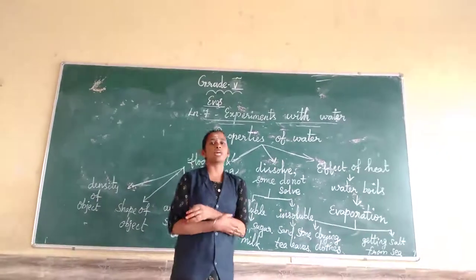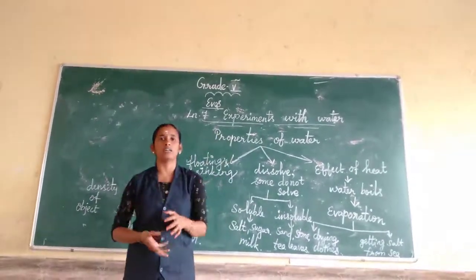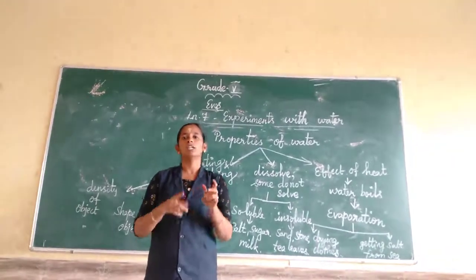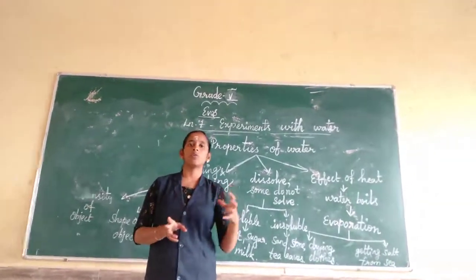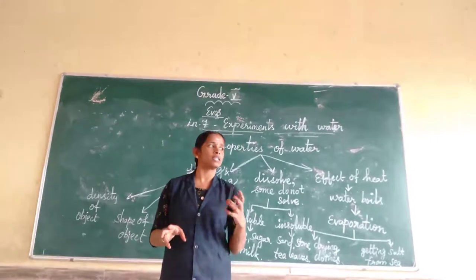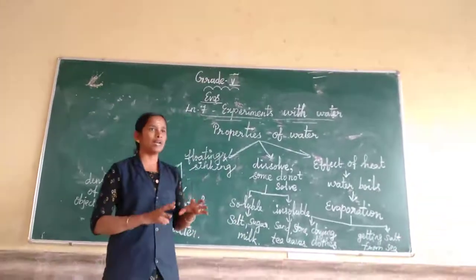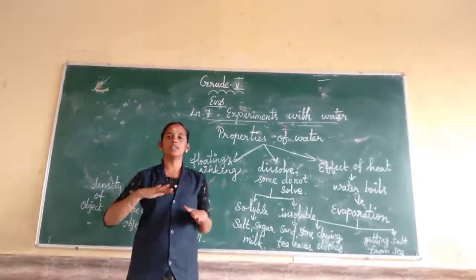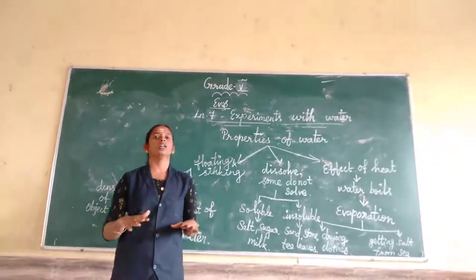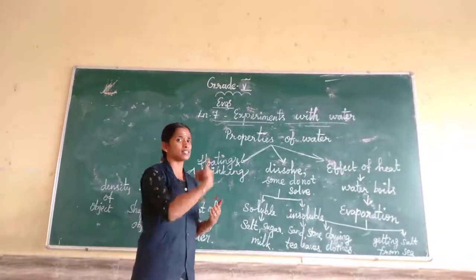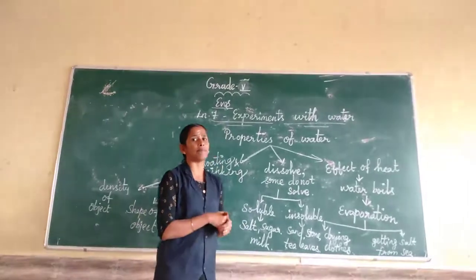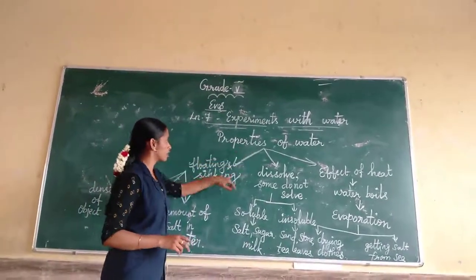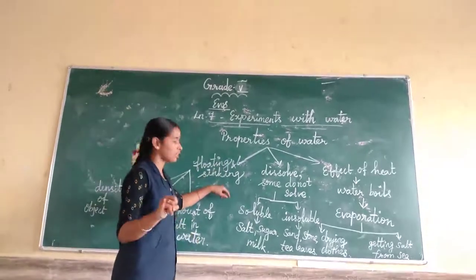What are the properties of water? The main properties of water are: soluble and insoluble — what things are dissolved and not dissolved. Also, some things will float and sink. The properties of water we will look at are: floating and sinking, then dissolving and not dissolving.